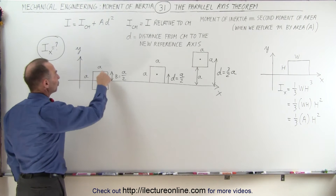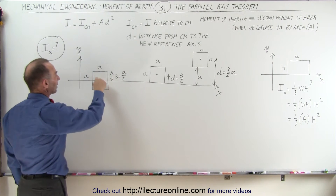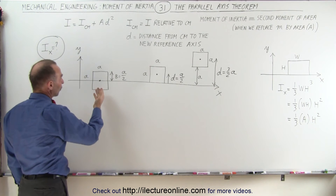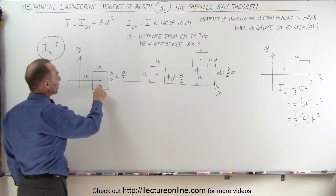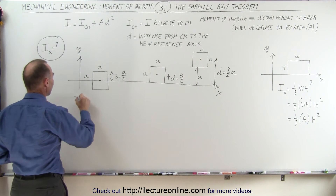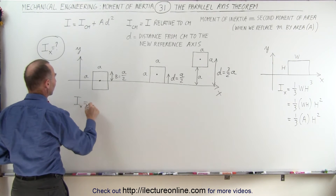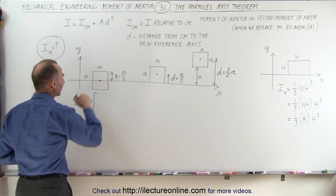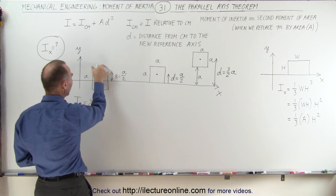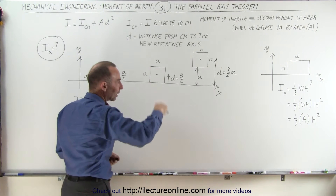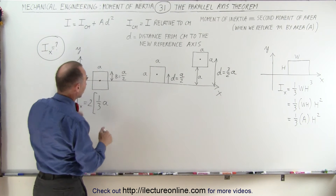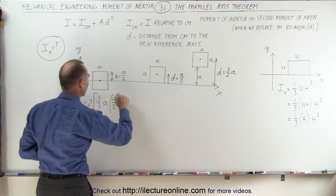Now, looking over here, we have two rectangles that are equal in size. This rectangle here has a height of a/2 and a width of a, and an area of 1/2 a squared. We have another rectangle right here that is exactly the same. So, therefore, we can say that I, the moment of inertia relative to the x-axis, is equal to 2 times the moment of inertia of each of the two rectangles, which would be 1/3 times the width a, times the height of the rectangle cubed — and the height is a/2. So this distance B here is a/2, and we can say (a/2) cubed.